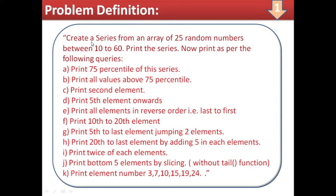This is the problem definition: create a series from an array of 25 random numbers between 10 and 60, then print the series. As per the following queries, we have to query various kinds of information. Number one: print the 75th percentile of this series — percentile has already been explained, like 25th and 50th percentile. Then print all values above 75th percentile. Print the second element using slicing. Print fifth element onwards. Print all elements in reverse order, last to first.